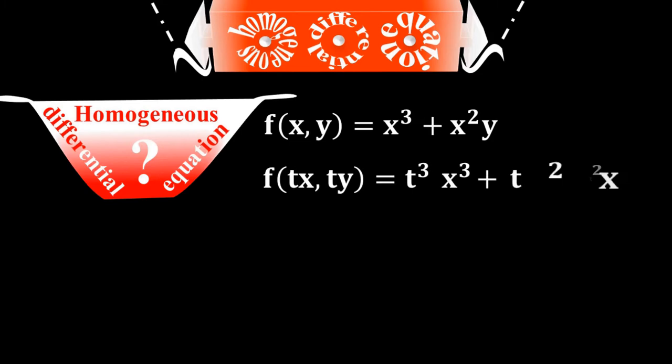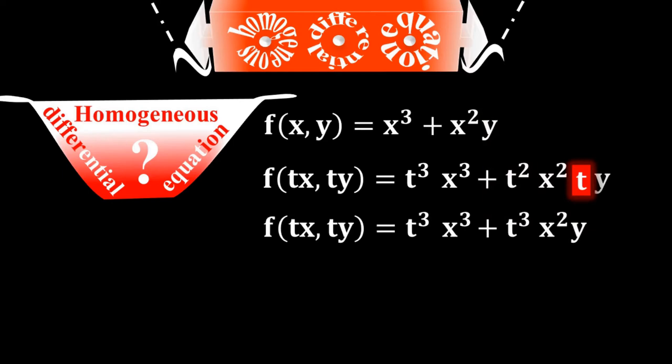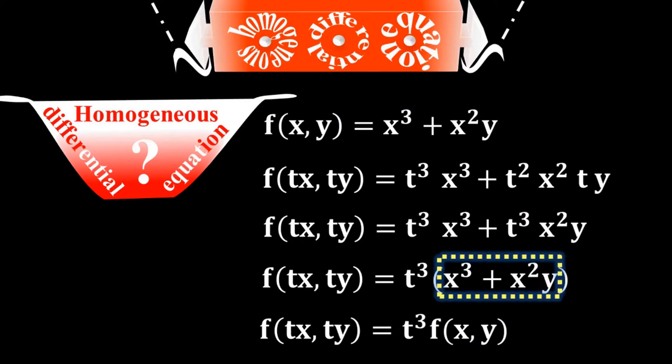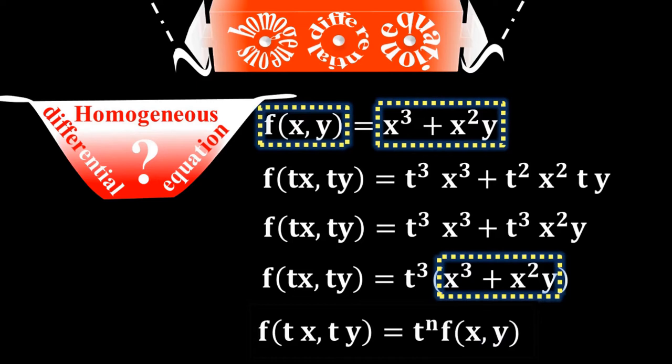Let me do a simple test. If f(x, y) = x³ + x²y, multiply all x and y variables by t. Simplifying, t³ is common among both terms. Taking t³ common gives back the exact value of f(x, y), confirming it is homogeneous. But if f(x, y) = x³ + 1 + x²y, the isolated constant 1 means it is not homogeneous — it will be non-homogeneous.